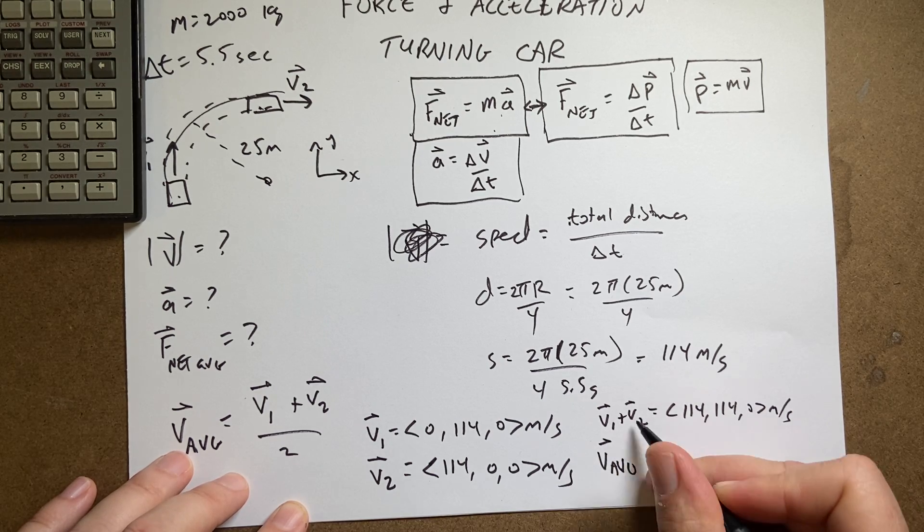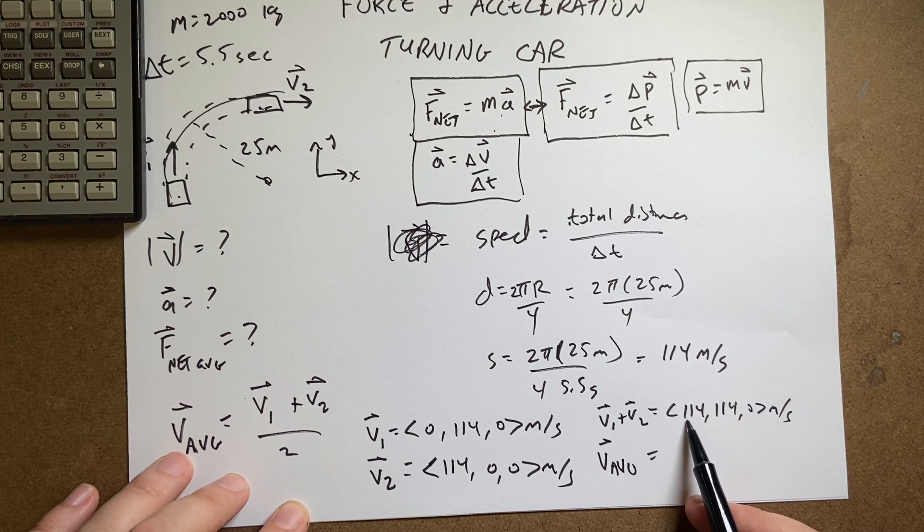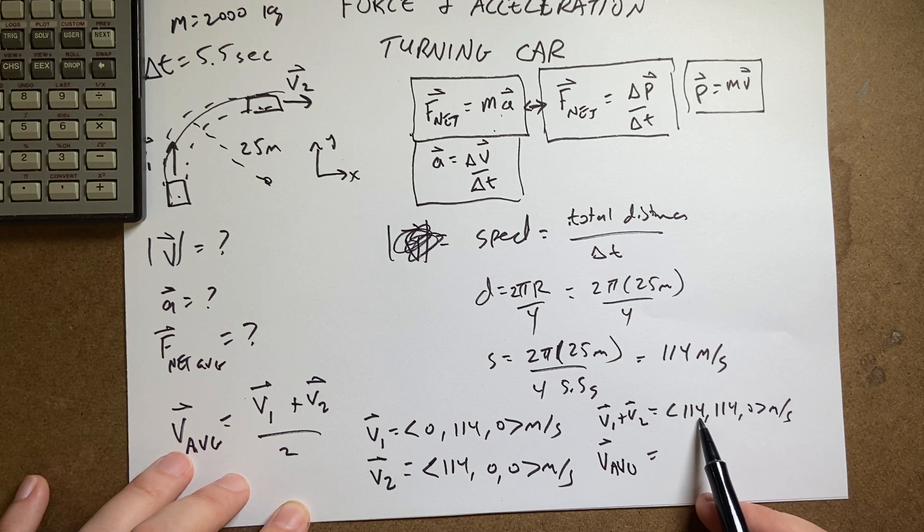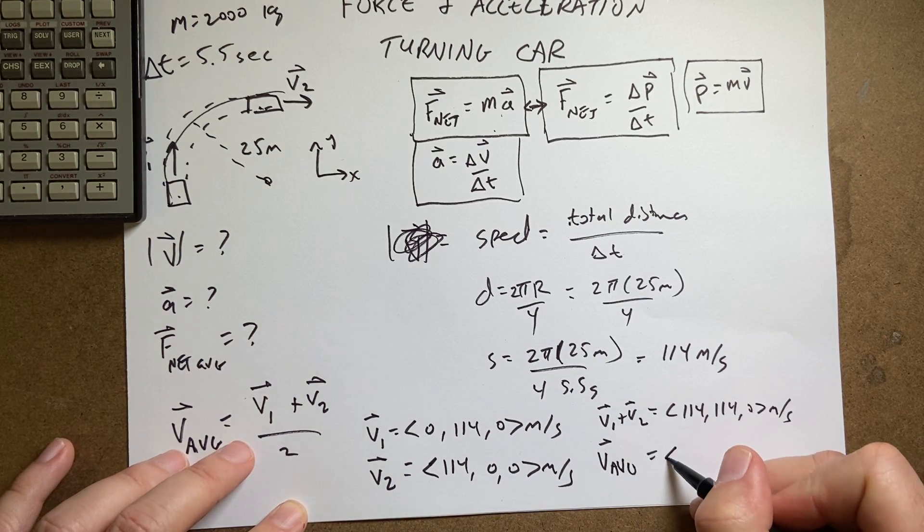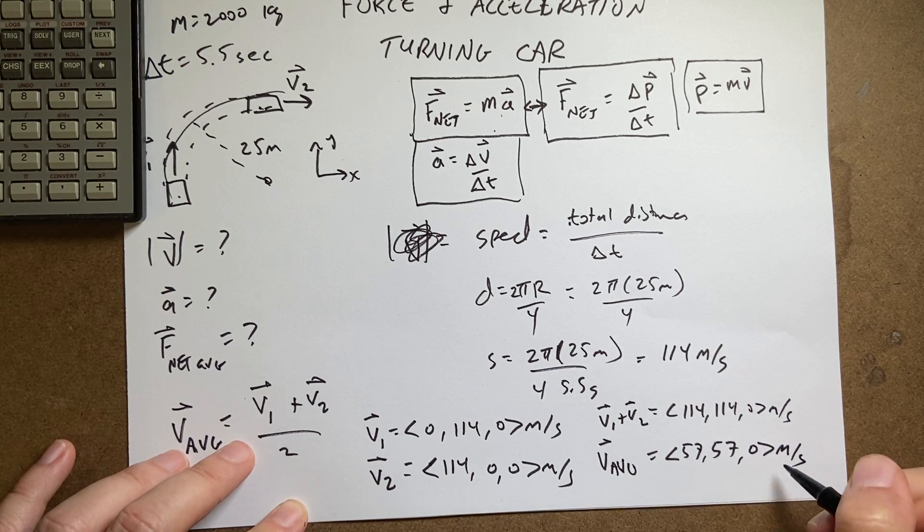So I need to divide this by 2 and divide that by 2. This is going to be 100 divided by 2 is 50, 14 divided by 2 is 7. So this is 57, 57, 0 meters per second.